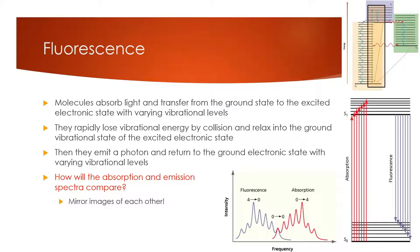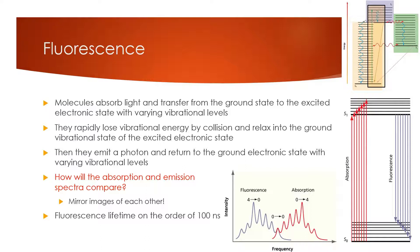The fluorescence lifetime is on the order of 100 nanoseconds — that's about how long molecules exist in the excited state before emitting back down to the ground state. This means that fluorescence basically only happens when you are shining light on the molecules. You shine light on them, they fluoresce as you're shining light, and when the light goes away, they stop fluorescing. We'll look at probably some demos of this in class to show what this technique looks like.